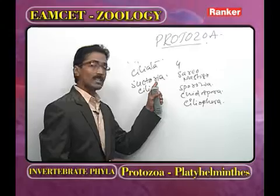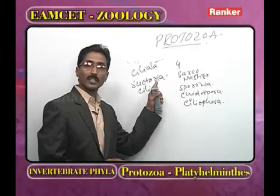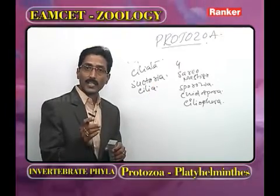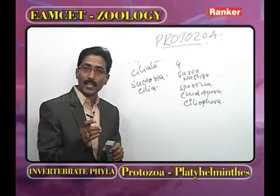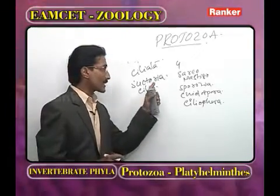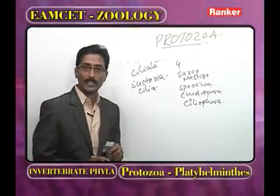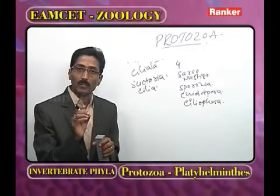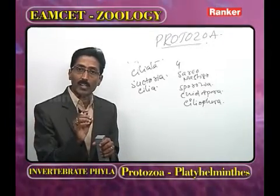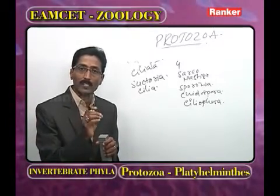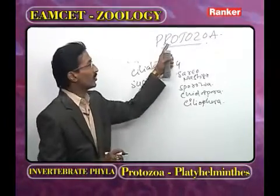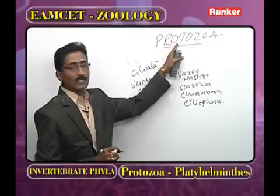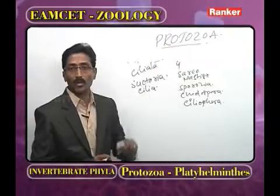Suctoria got their name because the tentacles help in the sucking of food materials. These are the important points regarding the MZ examination with reference to phylum Protozoa — the important character being unicellular nature.